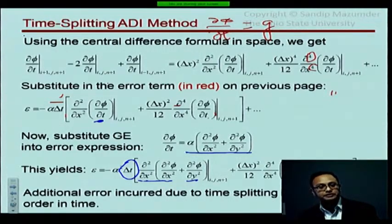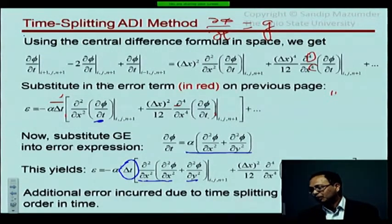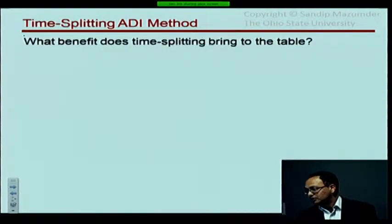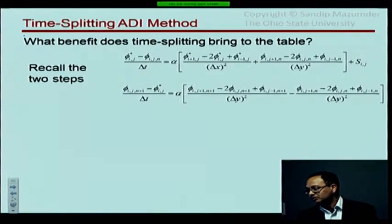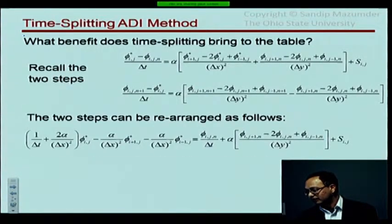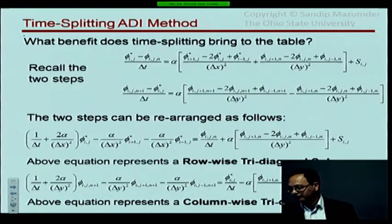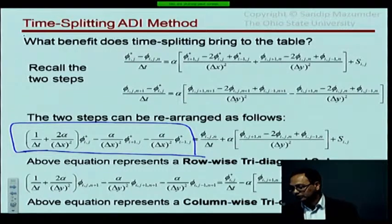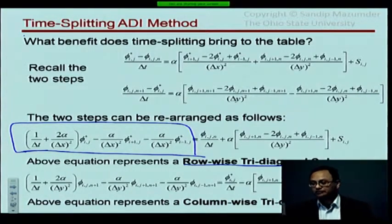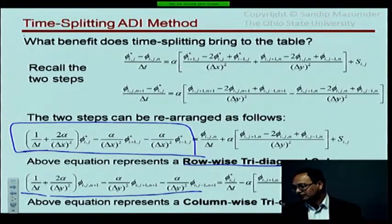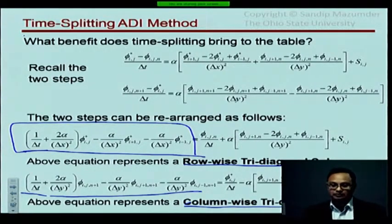A student asks: 'No time-step restrictions—you mean the size?' Yes, the size of the time step. Because both steps are implicit, they are unconditionally stable. Time splitting brings two tridiagonal solves per time step—one row-wise, one column-wise. Very cheap, very little memory involved.